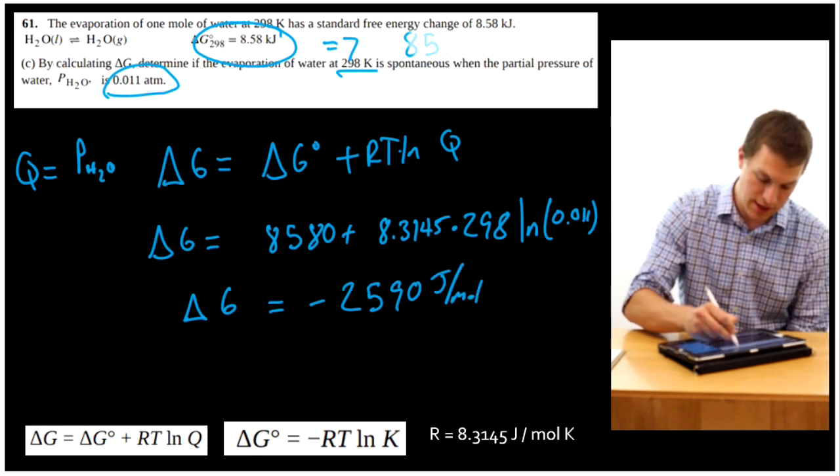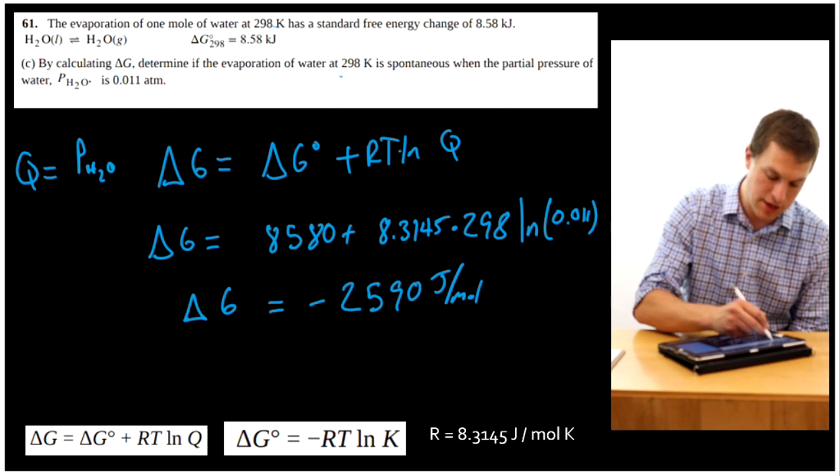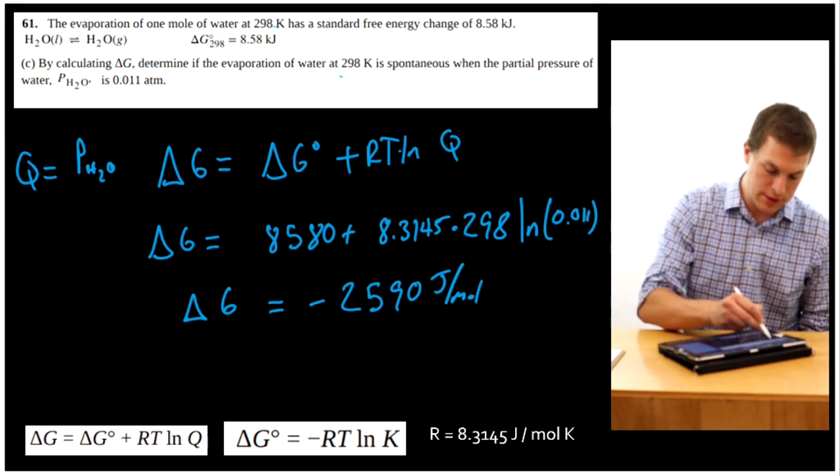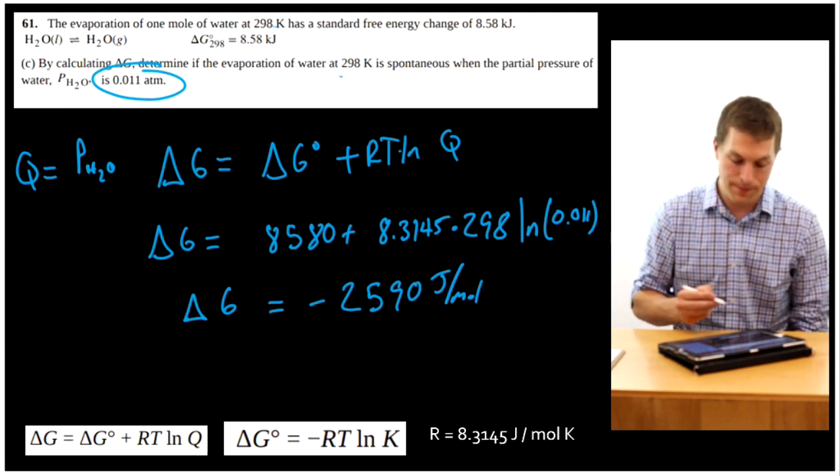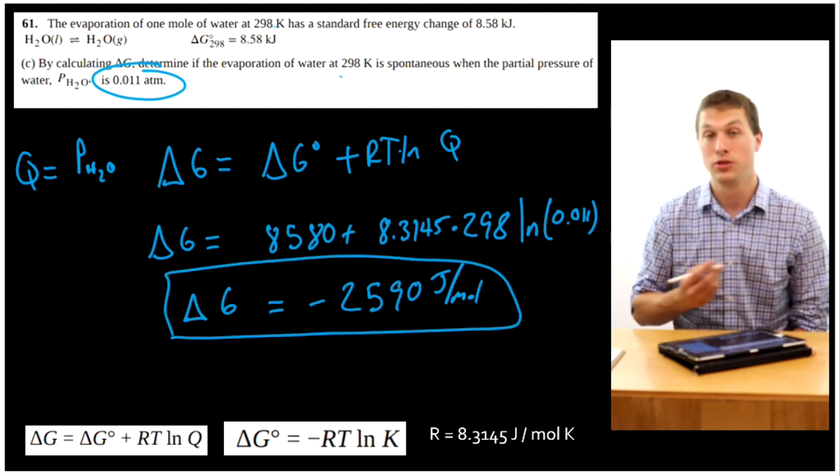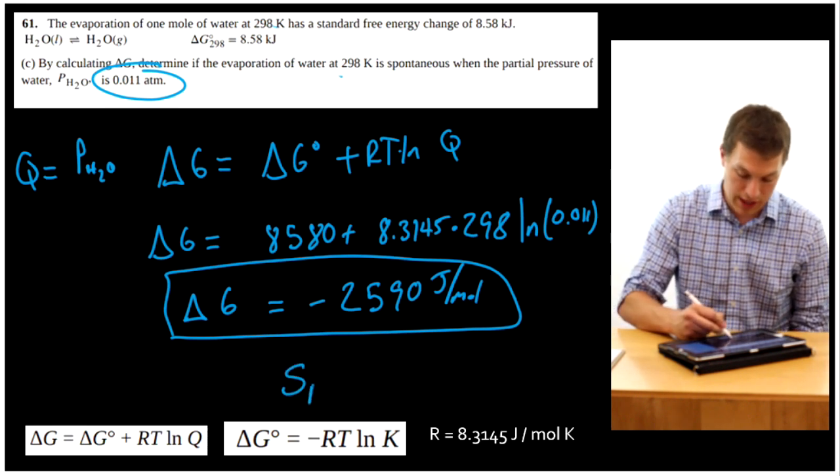Notice this is for non-standard states. So what have we done in this problem? We've calculated delta G at a pressure that was not standard state. Remember, if this was at standard state, this pressure here would be one bar. It's not. Another thing important to notice is that this is a negative delta G, and so negative delta Gs are spontaneous. So the answer is, it would be spontaneous.